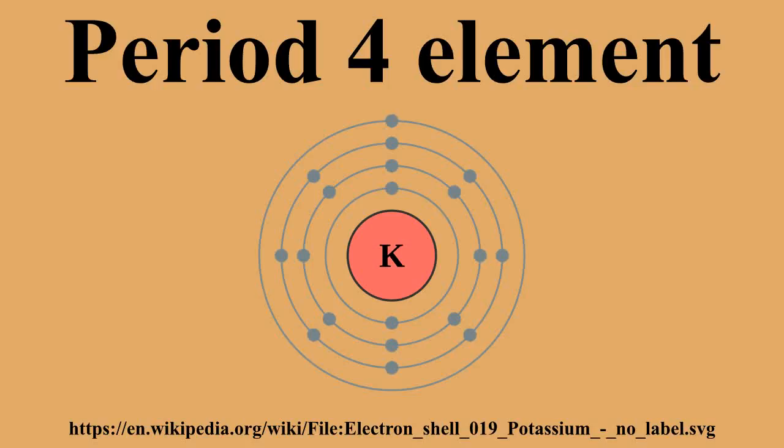Cobalt is an element in period 4, between iron and nickel. Cobalt is commonly used in pigments, as many compounds of cobalt are blue in color. Cobalt is also a core component of many magnetic and high-strength alloys. The only stable isotope, cobalt-59, is an important component of vitamin B12, while cobalt-60 is a component of nuclear fallout and can be dangerous in large enough quantities due to its radioactivity.